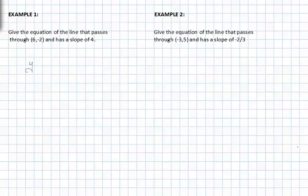Let's go ahead and use this equation in two examples. In example one, we're asked to give the equation of the line that passes through the point (6, -2) and has a slope of 4.